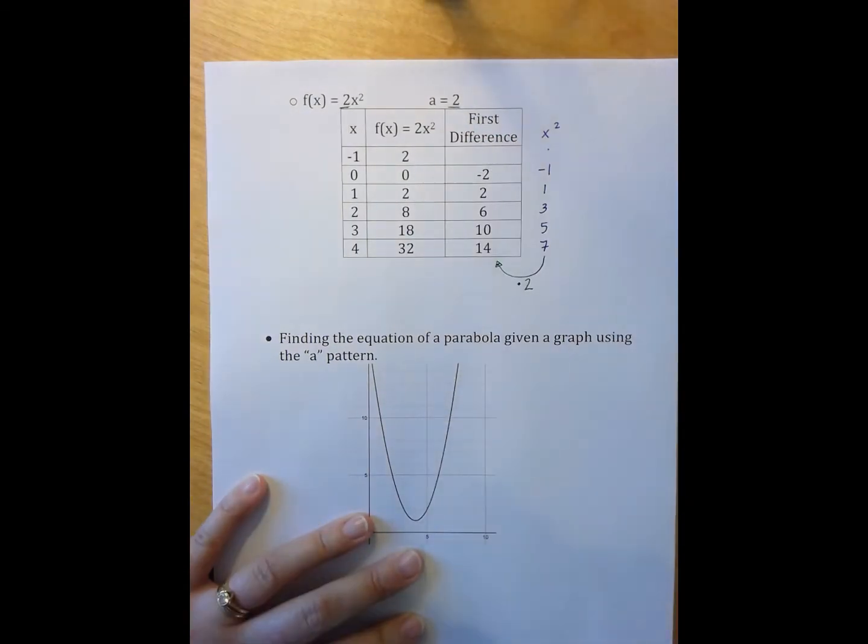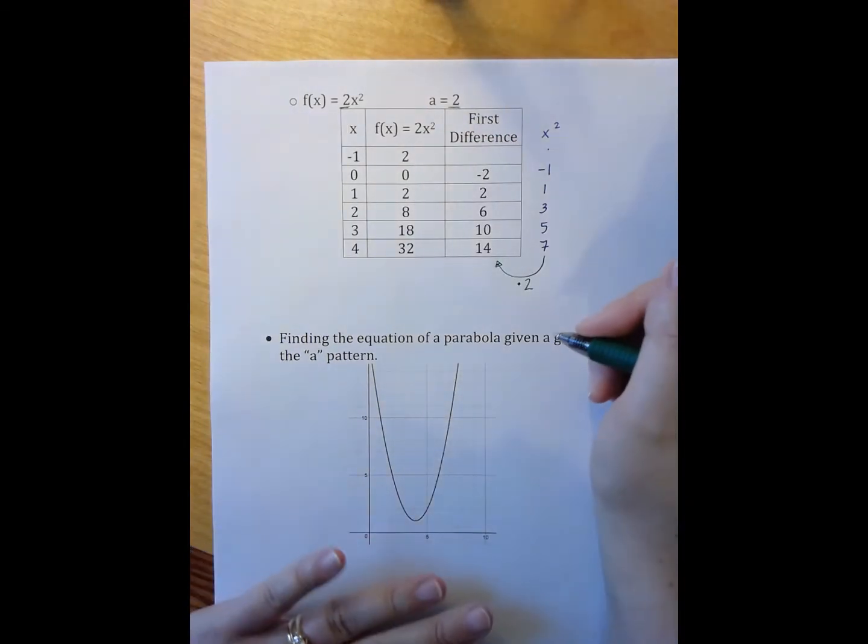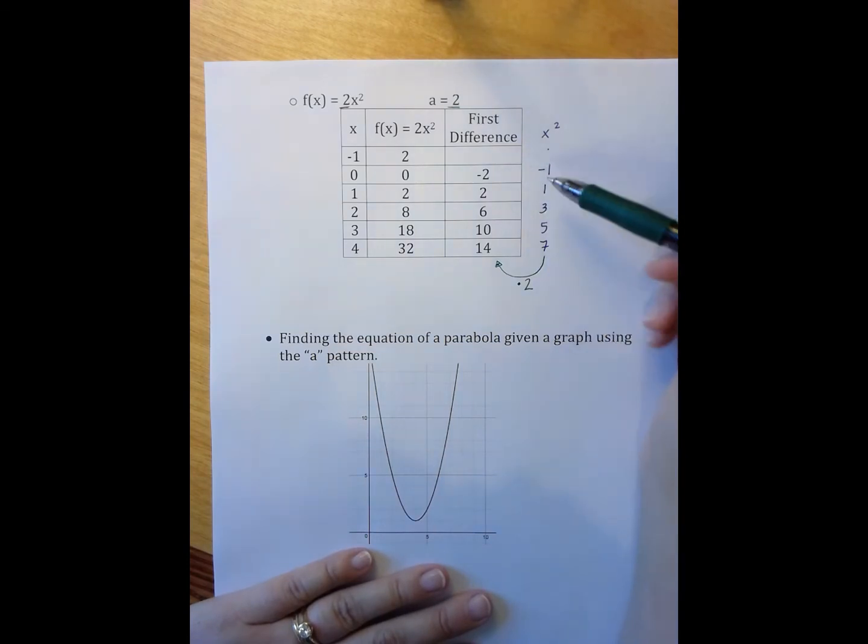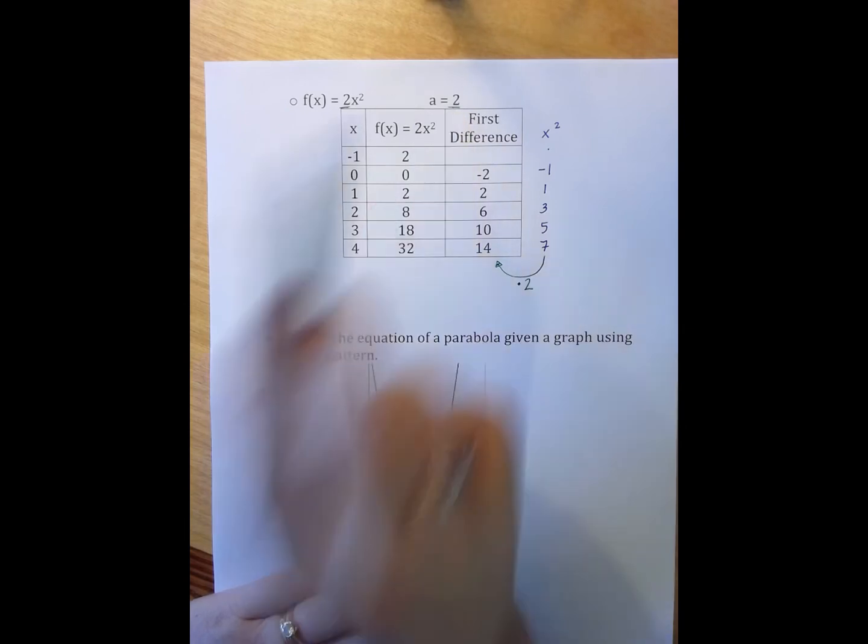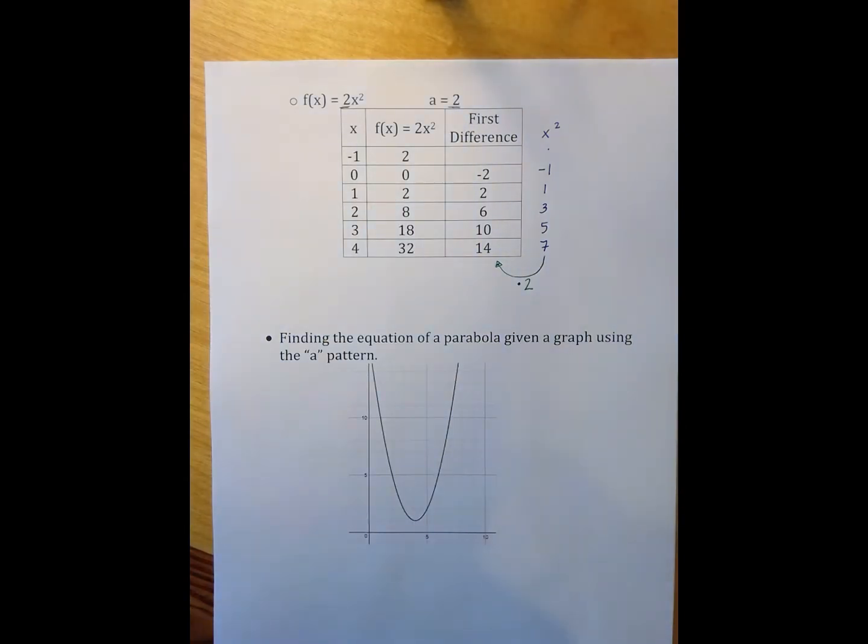So, when I'm looking at my parabola, I'm looking for this pattern of negative 1, 1, 3, 5, 7, and trying to figure out what has happened to this pattern in order to figure out what my a value is. So, let's look at an example of this.